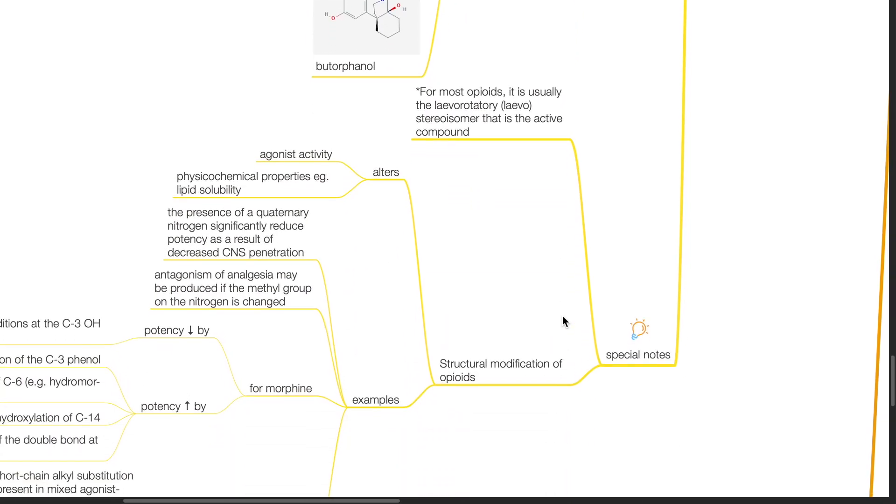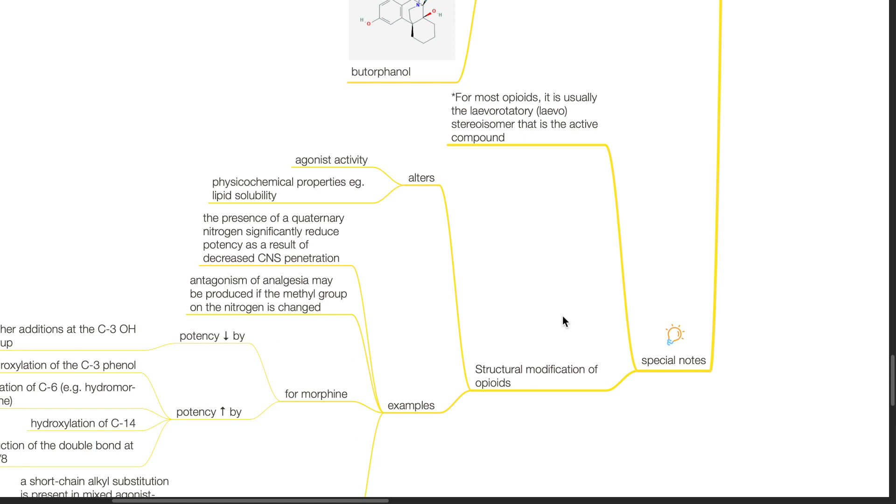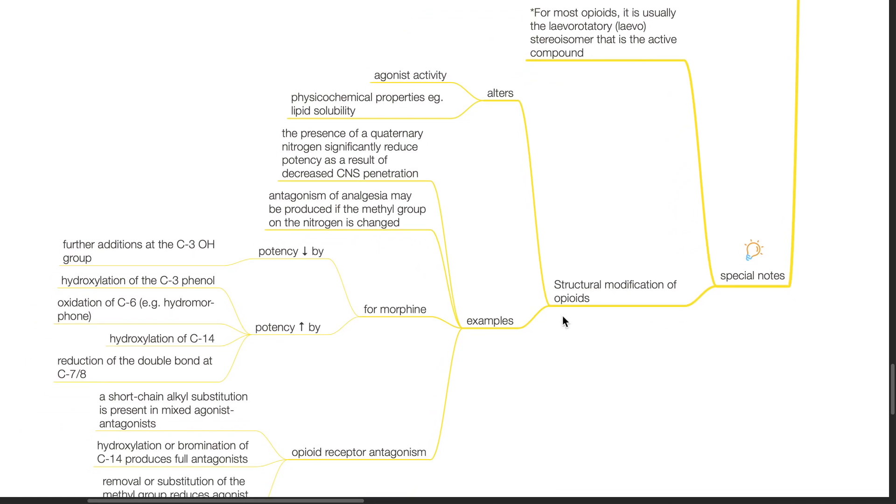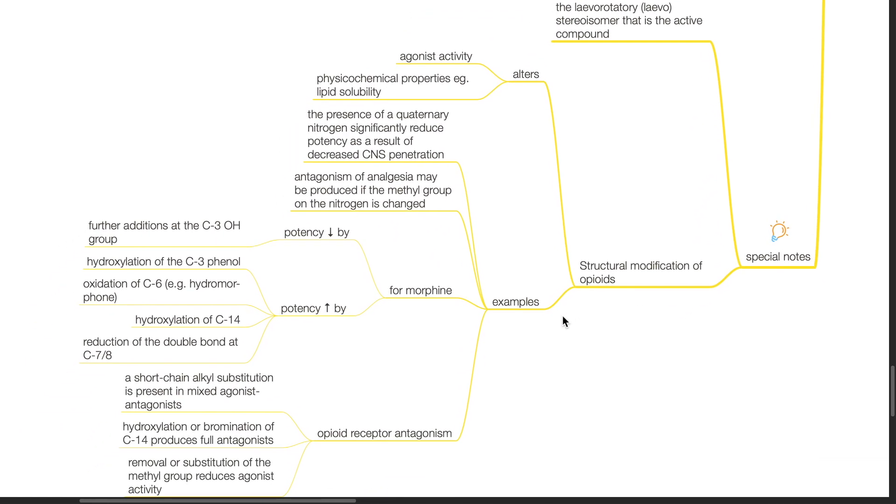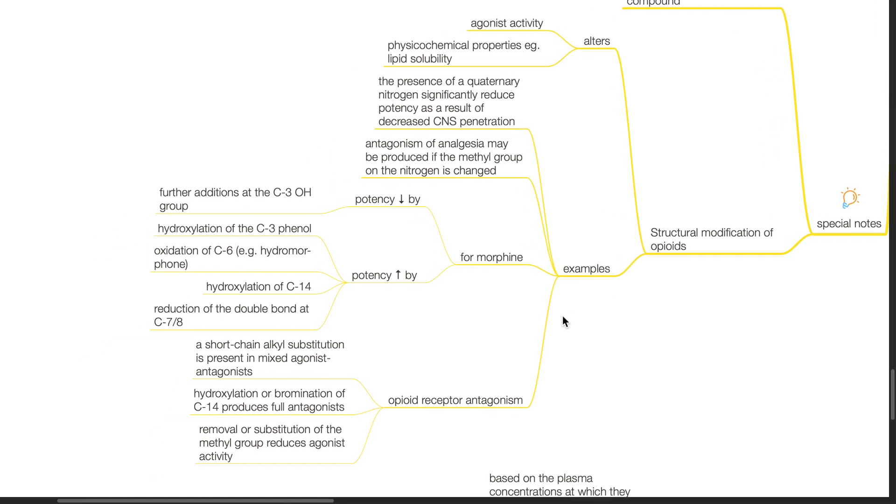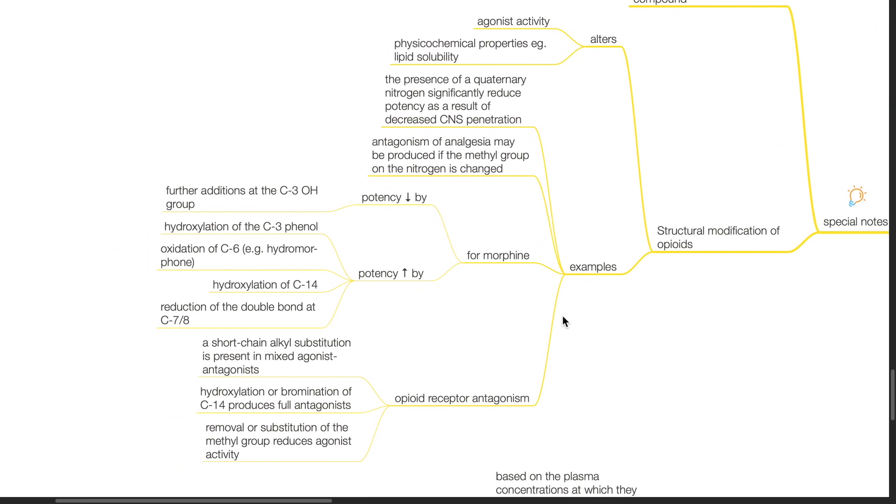Special notes, for most opioids it is usually the levorotatory stereoisomer that is the active compound. Structural modifications of opioids alters agonist activity and physical chemical properties such as lipid solubility. For example, the presence of a quaternary nitrogen significantly reduces potency as a result of decreased CNS penetration. Antagonism of analgesia may be produced if the methyl group on the nitrogen is changed. For morphine, potency is reduced by further additions at the C3OH group. Potency is increased by hydroxylation of the C3 phenol, oxidation of the C6 such as in hydromorphone, hydroxylation of C14, or reduction of the double bond at C7 or C8.